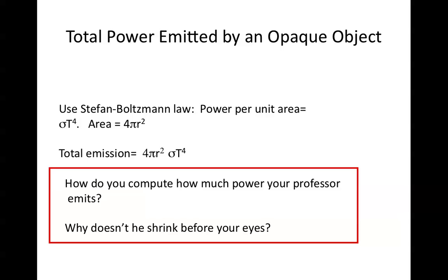If you want to calculate the total amount of power emitted by an opaque object, you use the Stefan-Boltzmann law that says the power per unit area is sigma T to the fourth, and you multiply it by the area. So for a sphere, that's 4 pi r squared. So the total emission from a sphere is 4πr² times σT⁴.